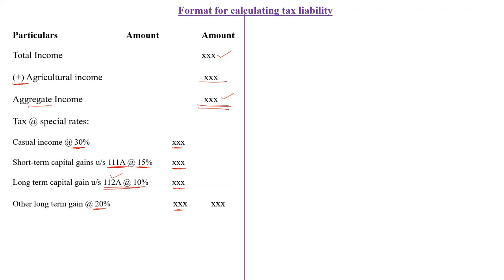After calculating tax at special rate, the next is tax at normal rate. If you don't have any of those four incomes, it is not necessary that we always have tax at special rate. If there is no tax at special rate, tax at normal rate will be calculated on the aggregate income or total income directly. If you have agricultural income, calculate tax at normal rate on aggregate income; if you don't have agricultural income, calculate on total income.